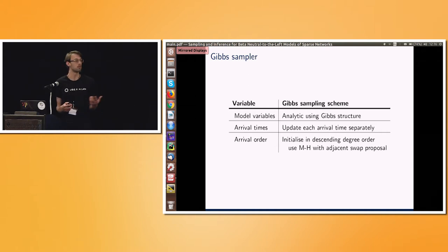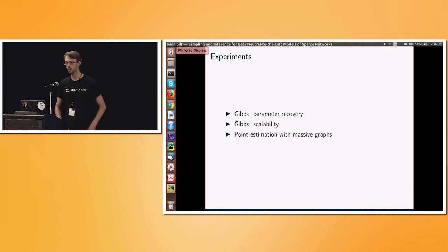So this is maybe the centerpiece of what we've done. We've said, take some exchangeable substructure, and look, we have a Gibbs sampler which runs in decent time.